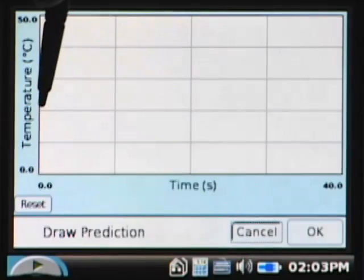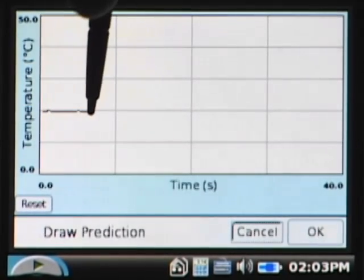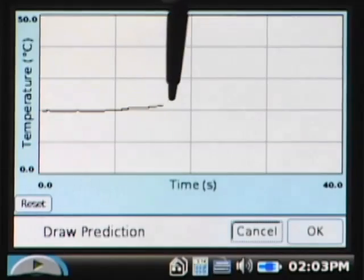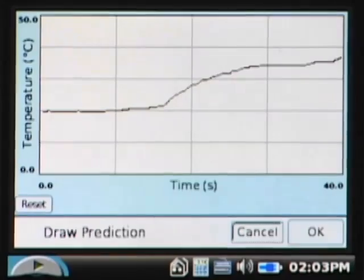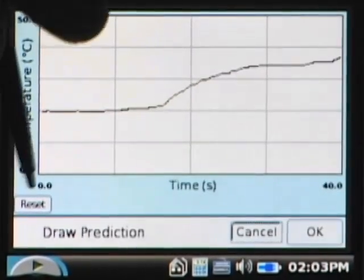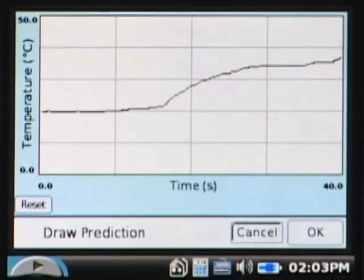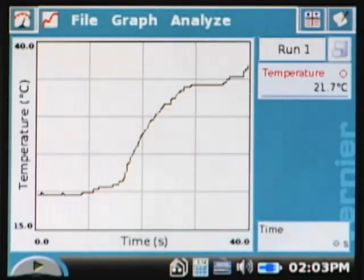It gives me a screen where I can draw the prediction. I'm going to say, well, maybe it goes along like this, and I add the baking soda, then maybe it gets warmer. If I don't like my prediction, I can always press reset and do another one, but I'm fine with that one. It draws my prediction on the graph.